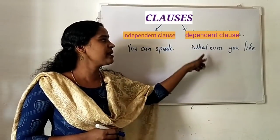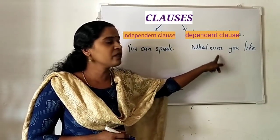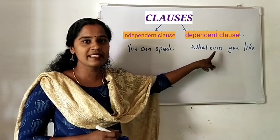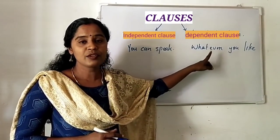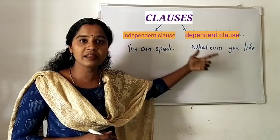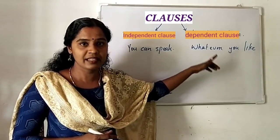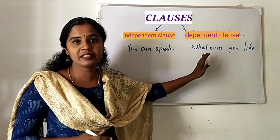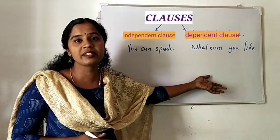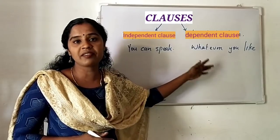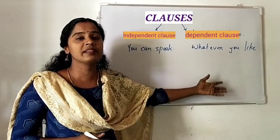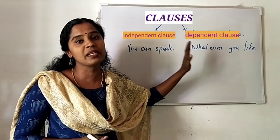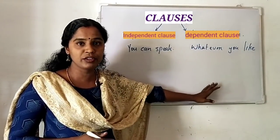For example, 'whatever you like' — this is a dependent clause. The word itself says that it is depending. So it depends on some other clause or parts of a sentence. A dependent clause alone is not complete; it needs the help of other subordinated clauses.